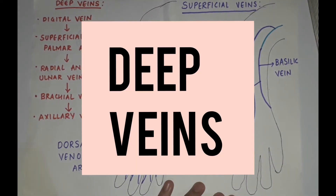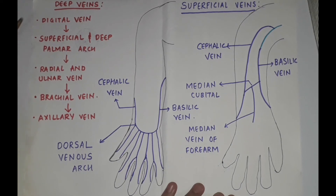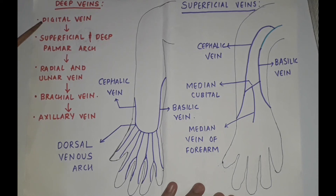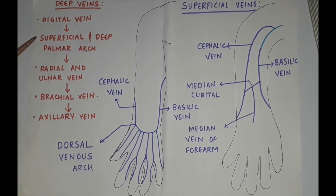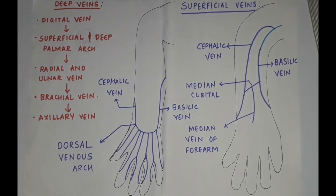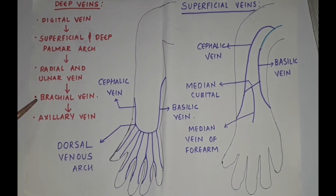The deep veins start as small venae comitantes running on each side as the digital veins. These veins continue proximally as the superficial and deep palmar arches, then course proximally to continue as venae comitantes of the major arteries. The veins are the radial and ulnar veins, which further join to form the brachial vein. The brachial vein lies on each side of the brachial artery and joins the axillary vein at the lower border of the teres major muscle.